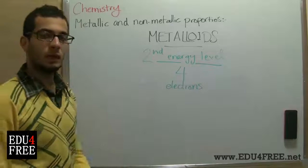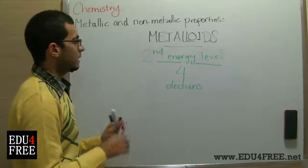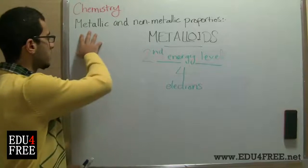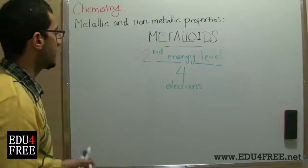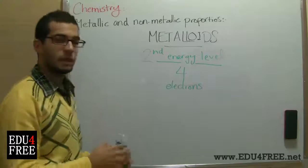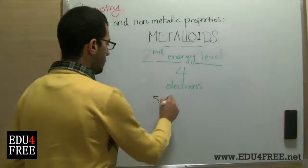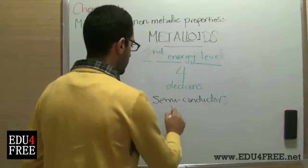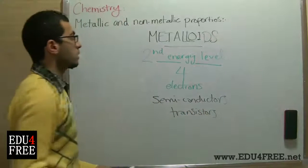Second, the electronegativity of metalloids is between metals and nonmetals. Third, the electrical conductivity of metalloids is less than metals but still higher than nonmetals. Finally, metalloids are known for being used in the electric industry as semiconductors and transistors.